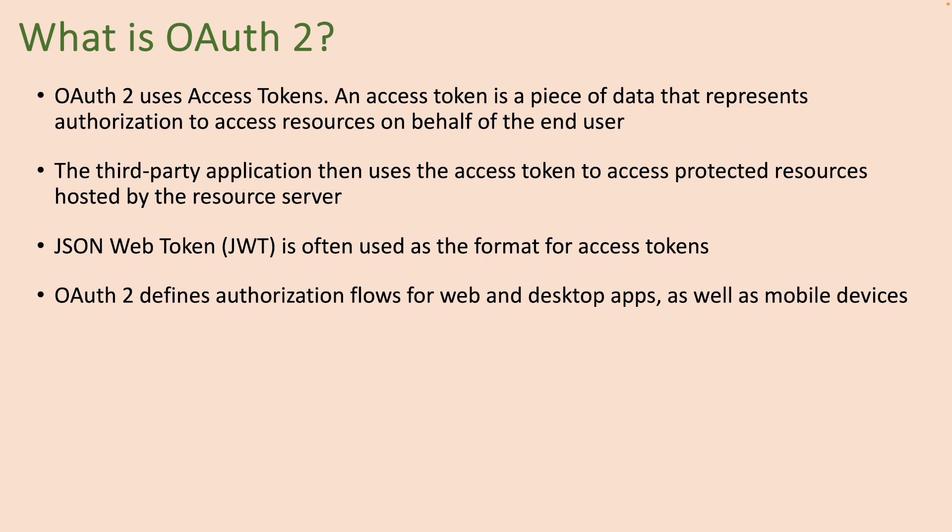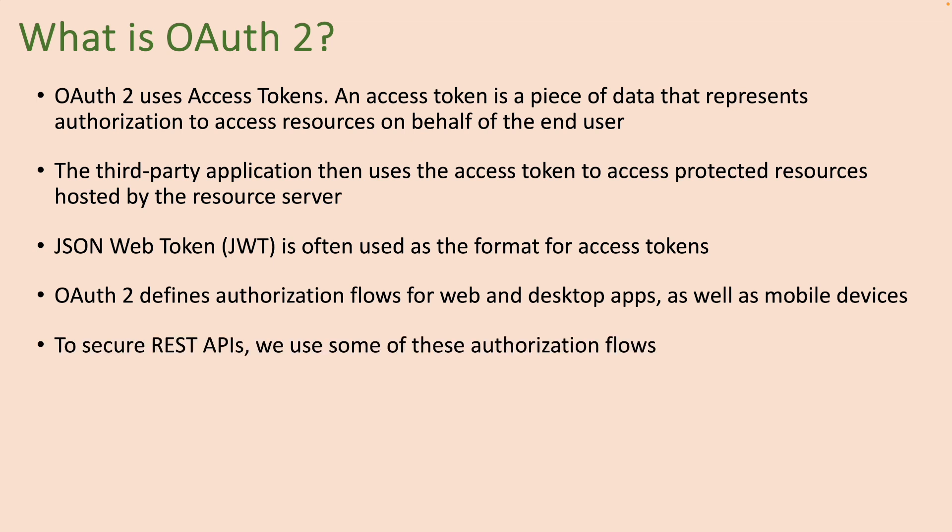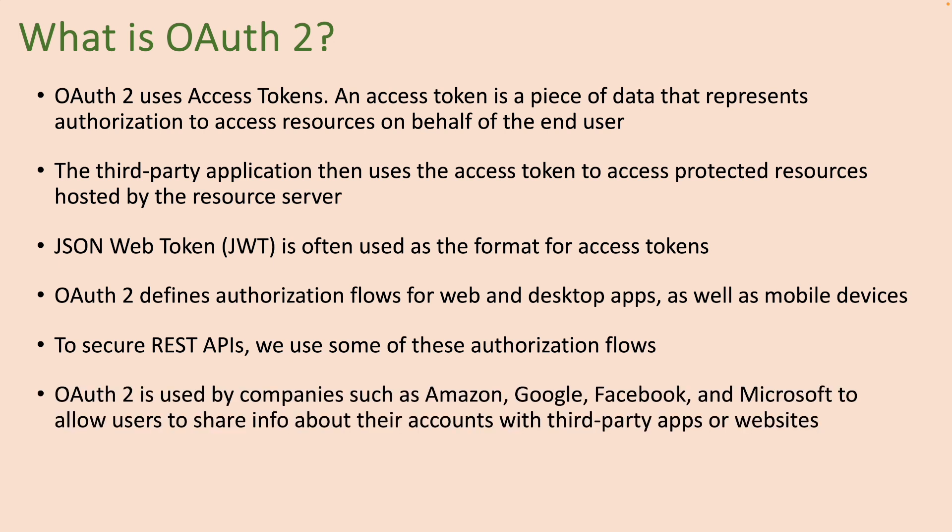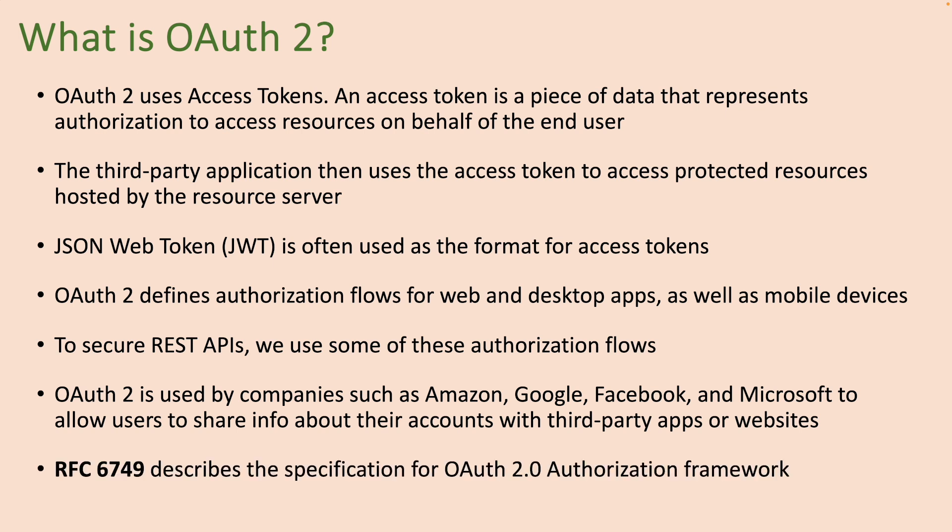OAuth 2.0 defines authorization flows for web and desktop applications as well as mobile devices, and to secure REST APIs we use some of these authorization flows. OAuth 2.0 is used by companies such as Amazon, Google, Facebook, and Microsoft to allow users to share information about their accounts with third-party applications or websites. The RFC 6749 describes the specification for the OAuth 2.0 authorization framework.